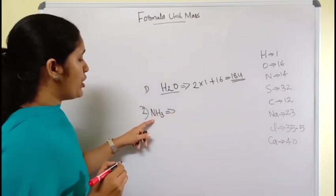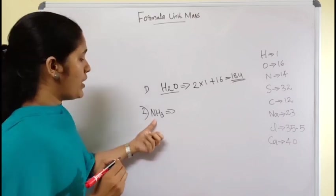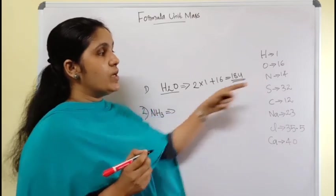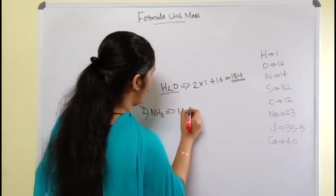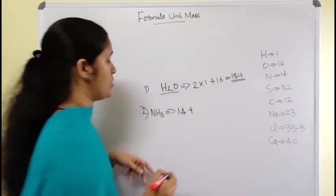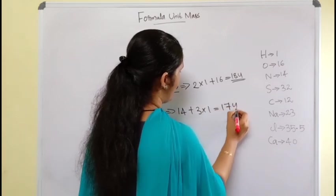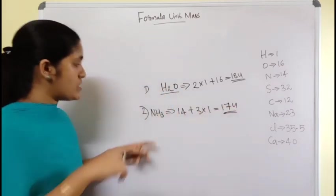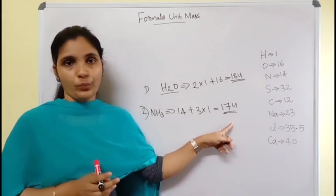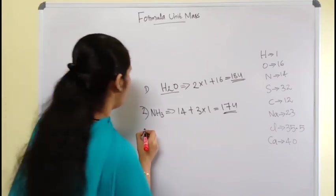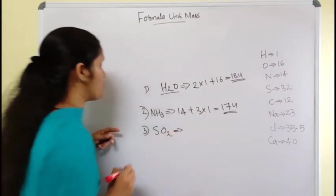Ammonia has one nitrogen and three hydrogens. Nitrogen's atomic mass is 14, therefore: 14 plus 3 × 1 = 17 u. So the formula unit mass of ammonia is 17 u.